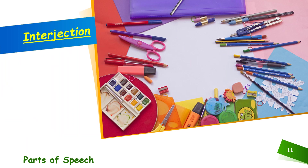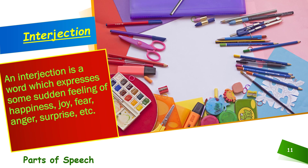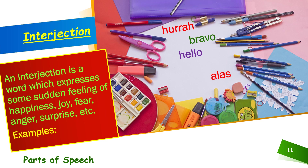Moving on to the next one, that is interjection. An interjection is a word which expresses some sudden feeling of happiness, joy, fear, anger, surprise, or any other feeling. These words are used to express our feelings, and they are generally very short words. For example: Hurrah! We won the match! Hello! Come here! Alas! He is gone! Bravo! You've done well! Oh! I got hurt! Wow! What a beautiful dress! And interjections are usually followed by an exclamation mark.